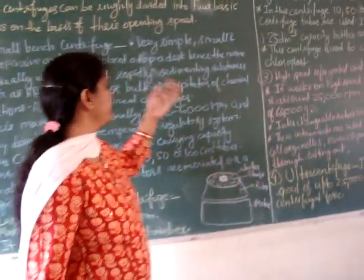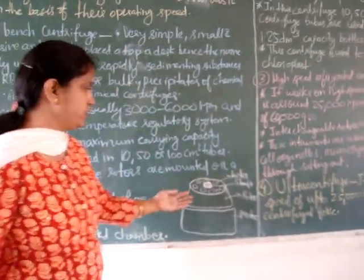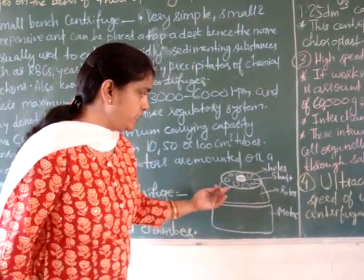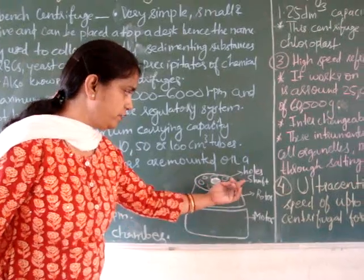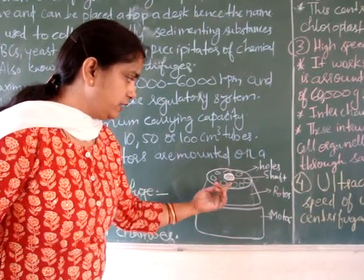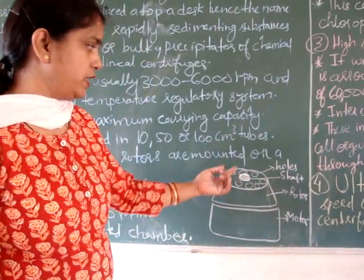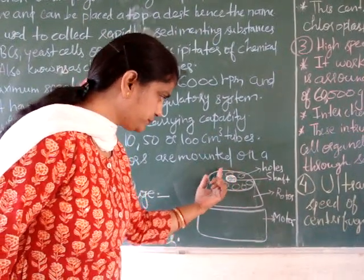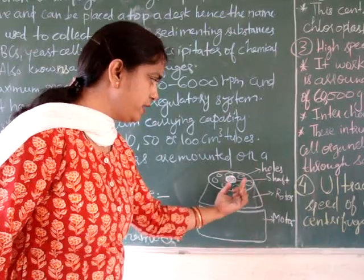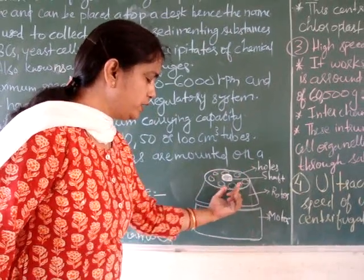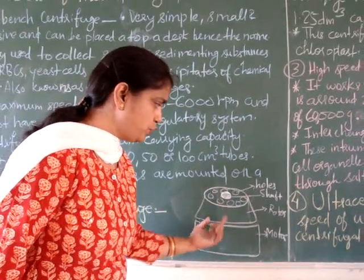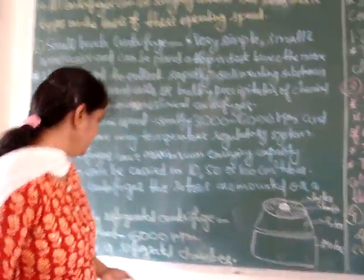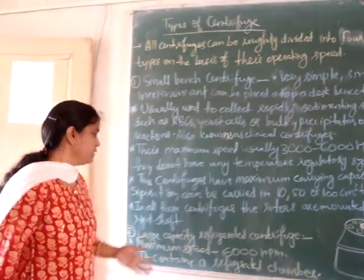In all these centrifuges, the rotors are mounted on a rigid shaft. This is a simple diagram of a desktop centrifuge — this is the rotor, this is the shaft, and to this shaft the rotor is attached. There are holes here for the centrifuge tubes, and this is the motor.